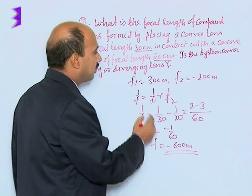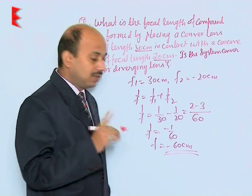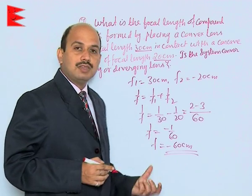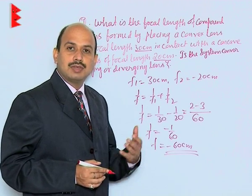This combination has got the focal length minus 60 centimeter. So obviously, the combination is behaving as a diverging lens.